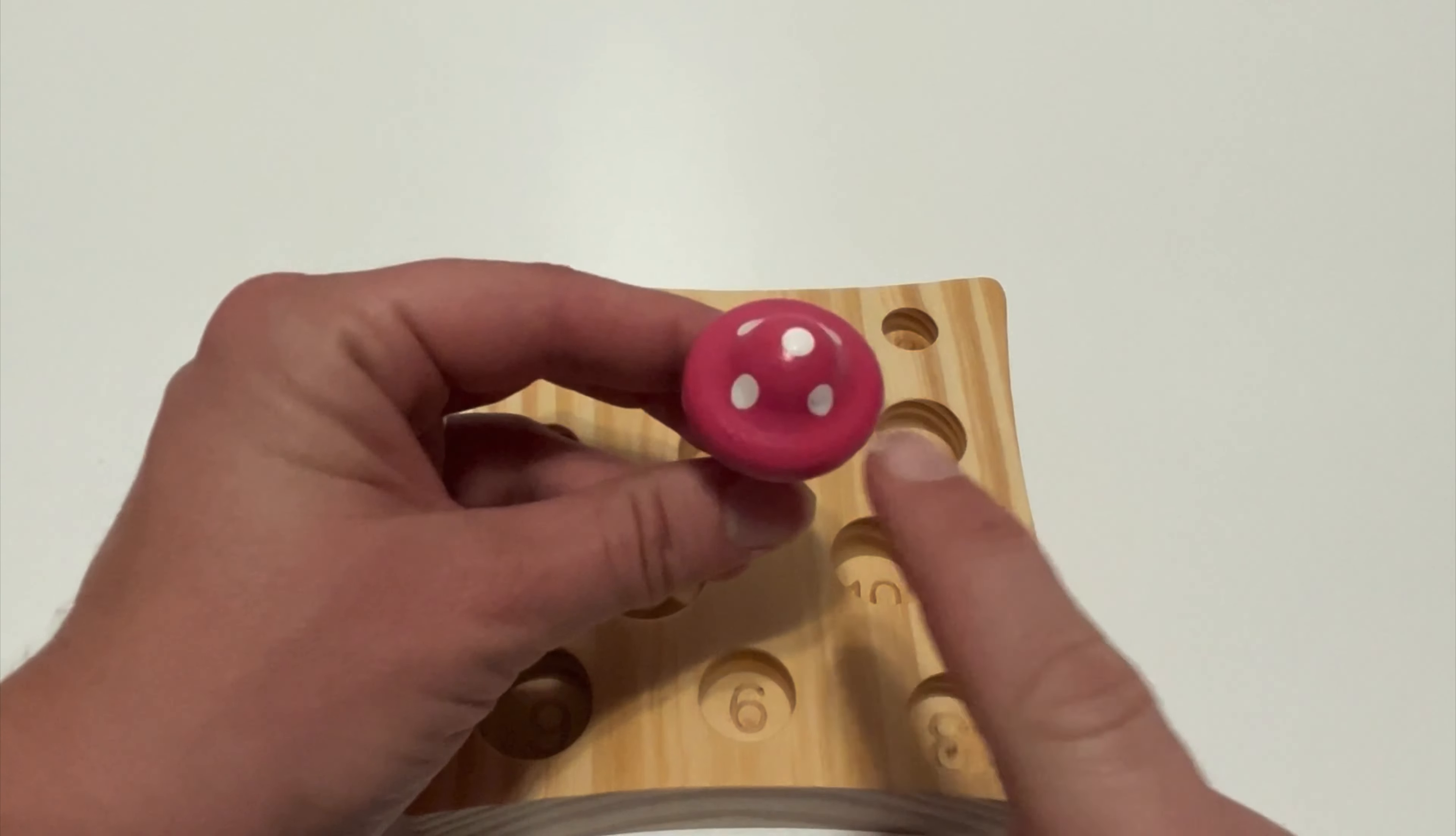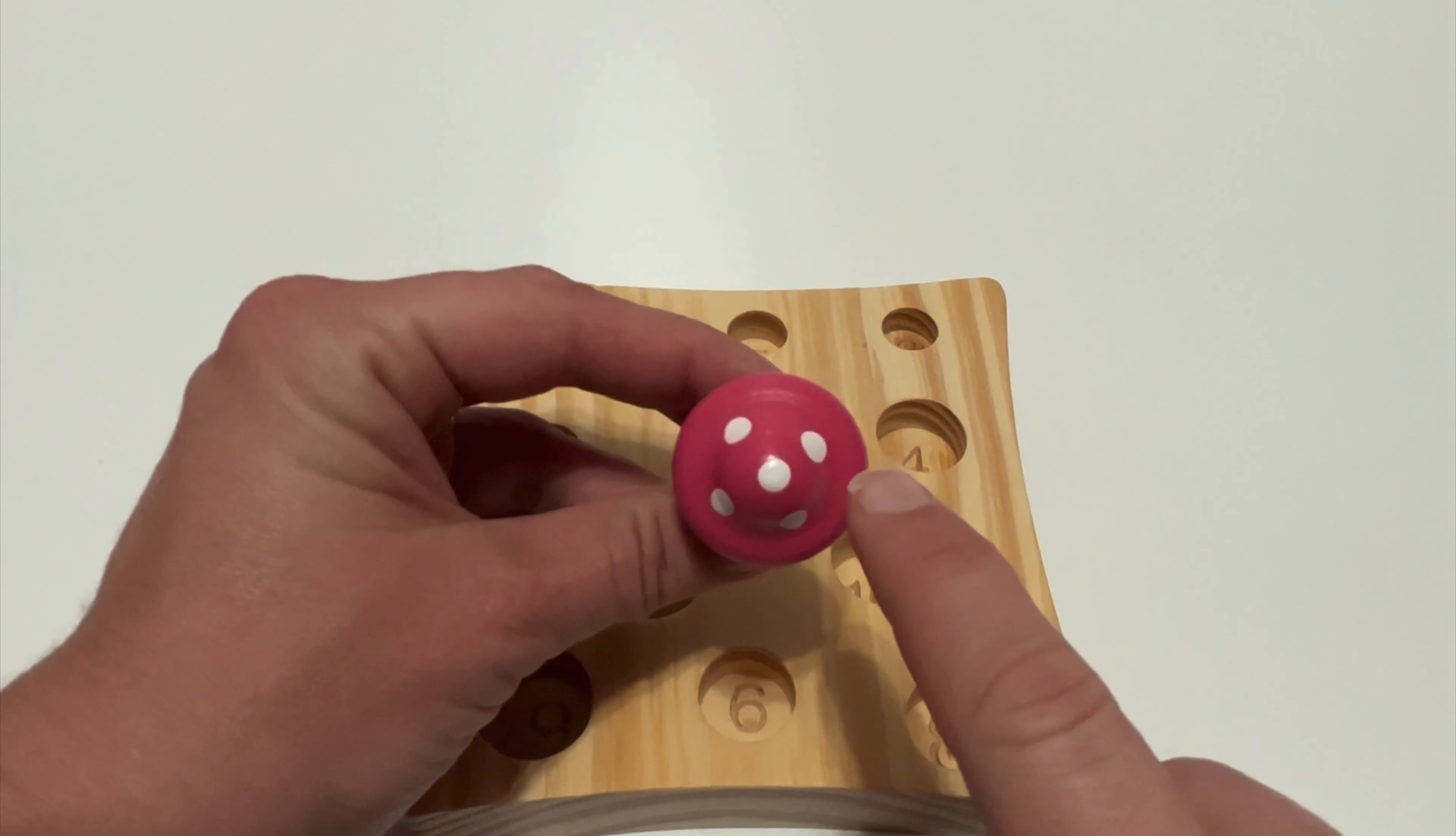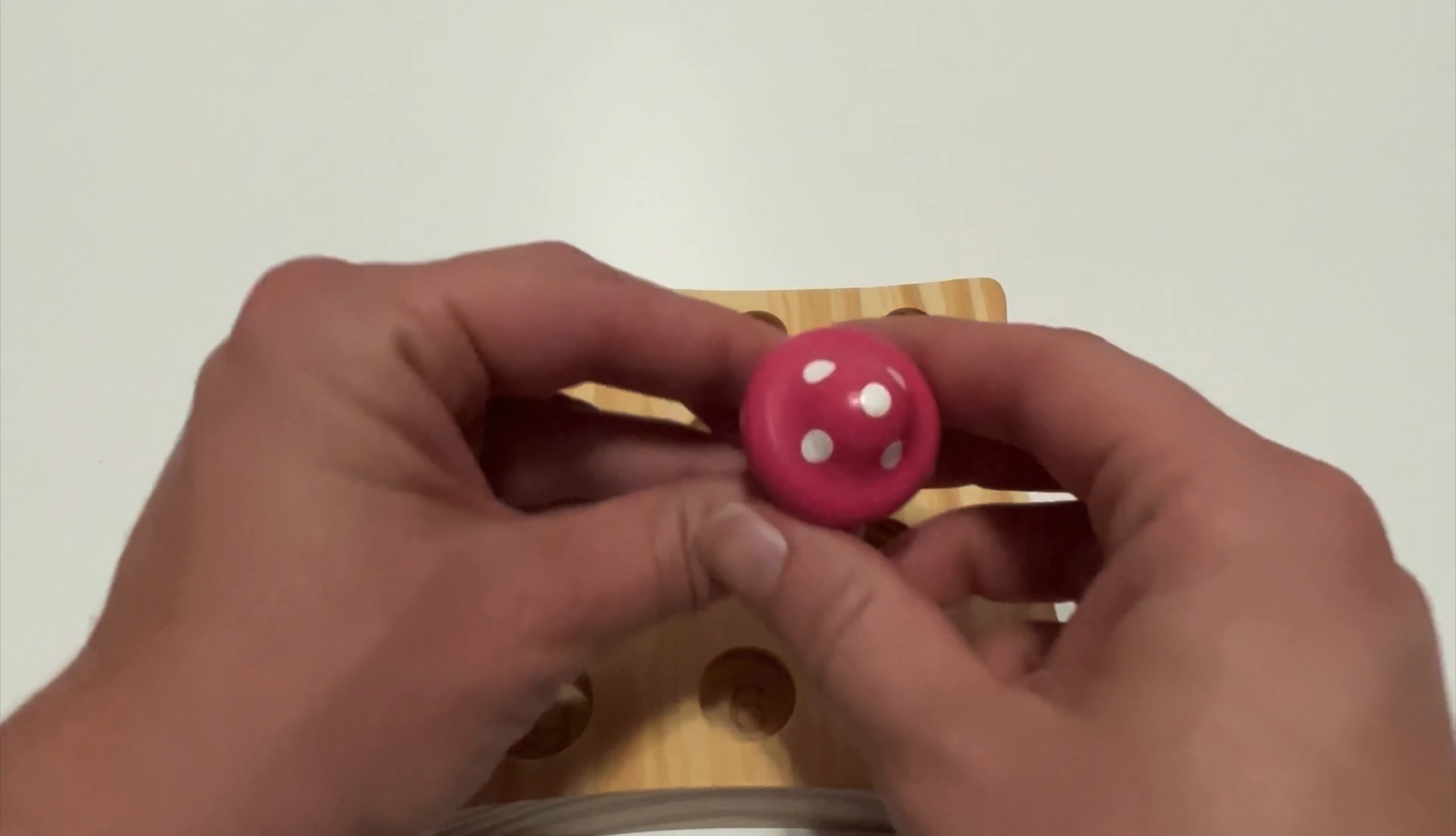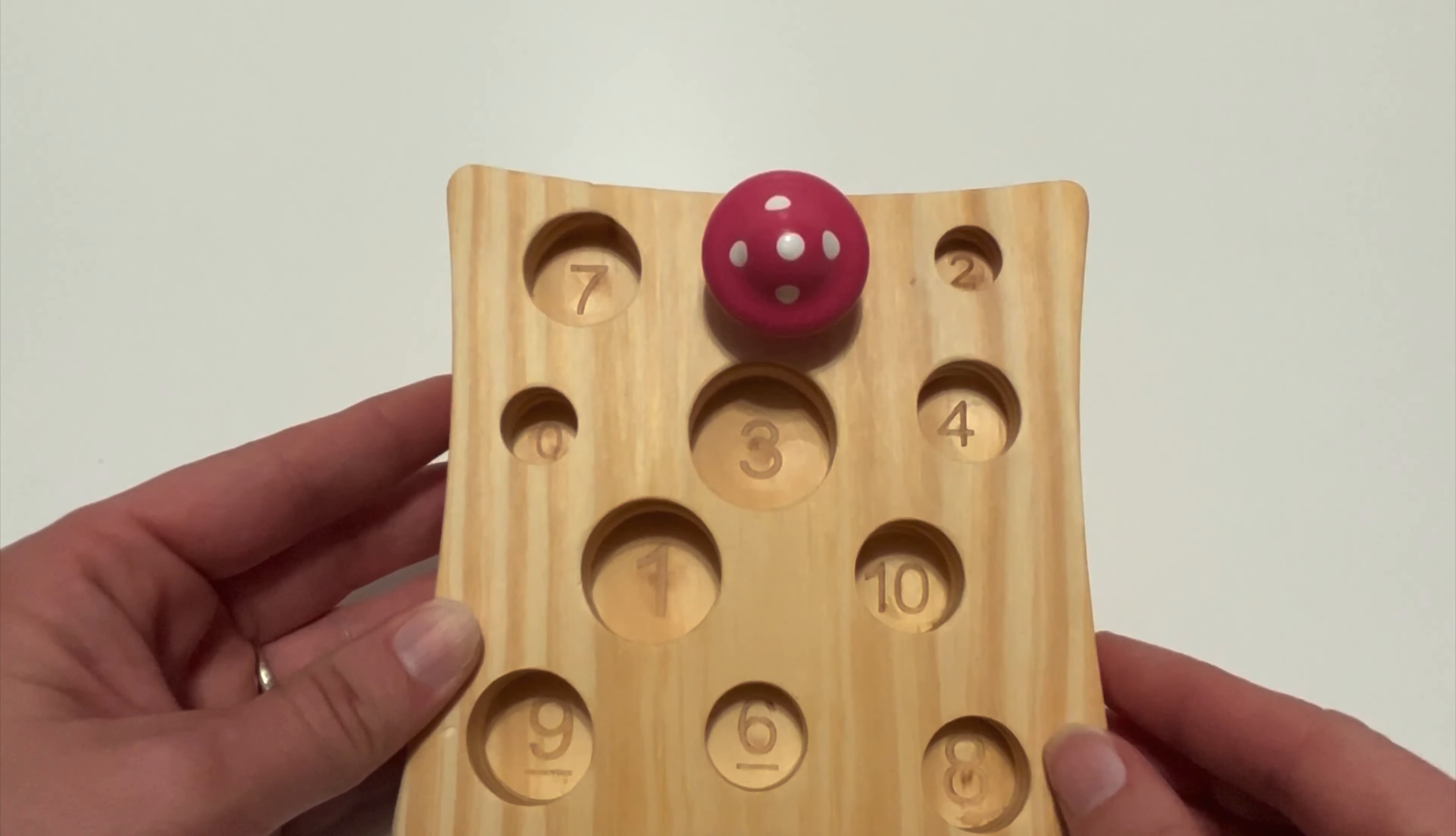How many white circles? One, two, three, four, five. Find the number five. You did it. Great job.